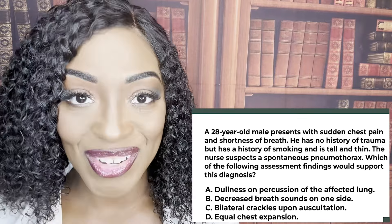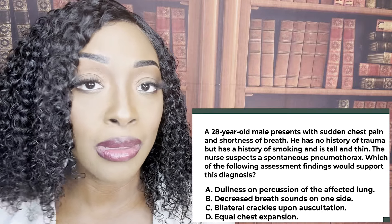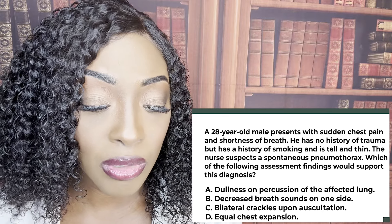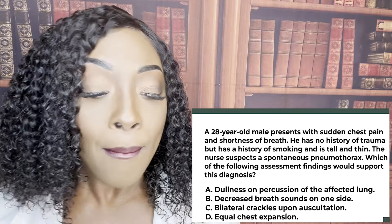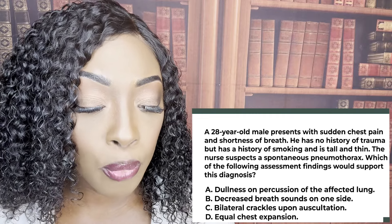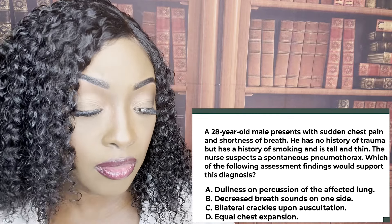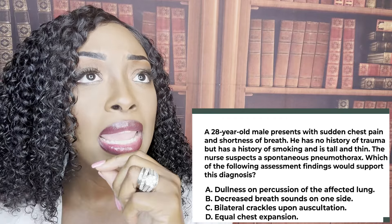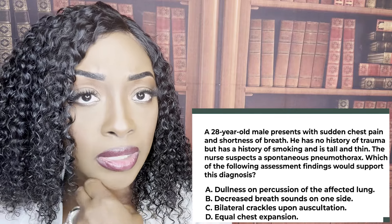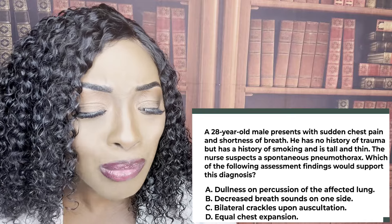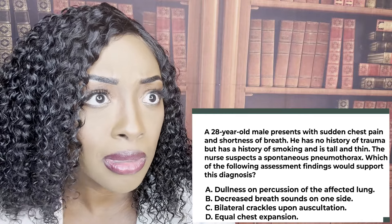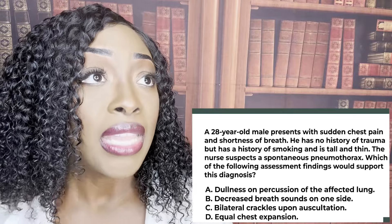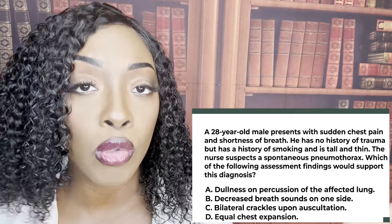The risk factors for a spontaneous pneumothorax are right there in the question: being male, having a history of smoking, and being tall and thin. The question asks what would support this diagnosis. It's B — decreased breath sounds on one side. Since the blebs ruptured on the surface of the lung, the patient would have decreased lung sounds on that side, along with chest pain and difficulty breathing.